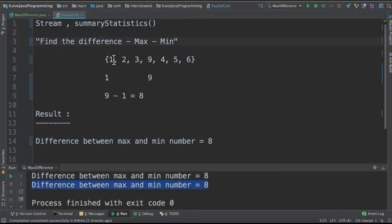For example, this is the given array and we have different numbers. So the maximum number is 9 and the minimum number is 1. So we need to find out the difference between these two. 9 minus 1 is 8.